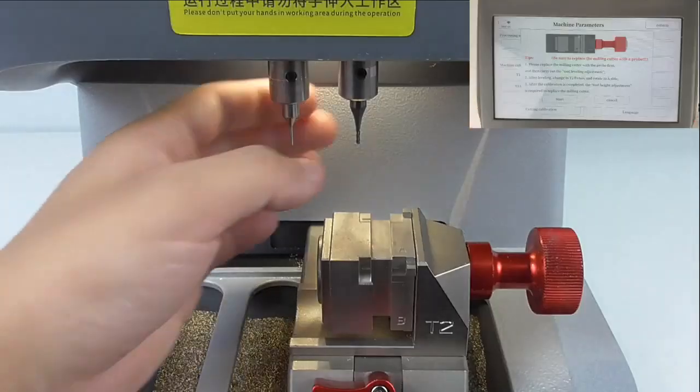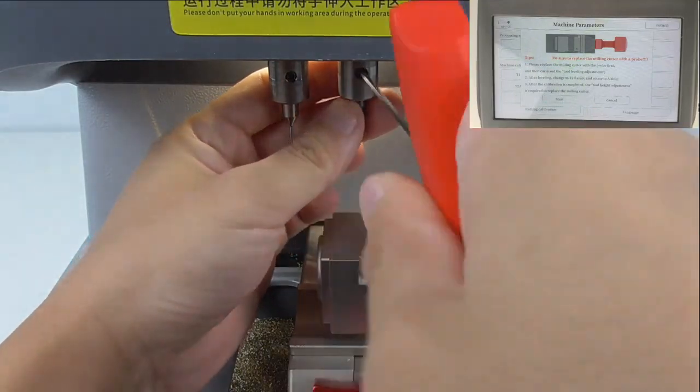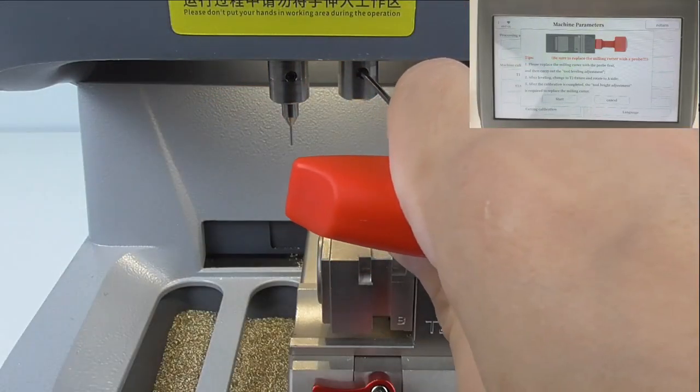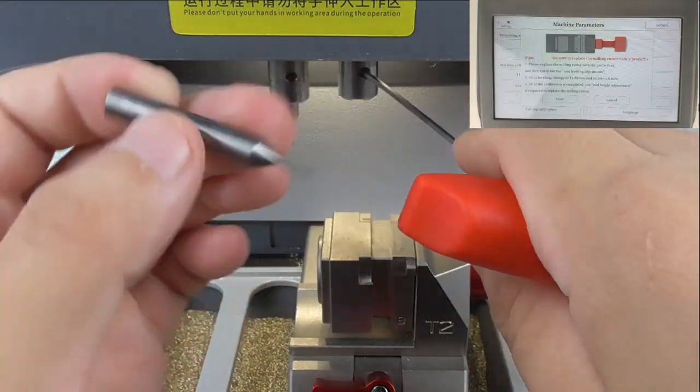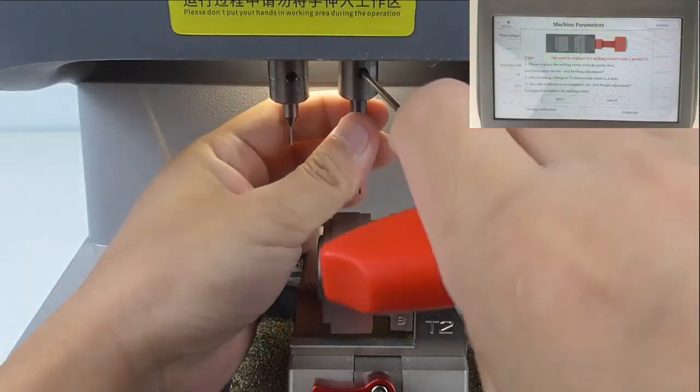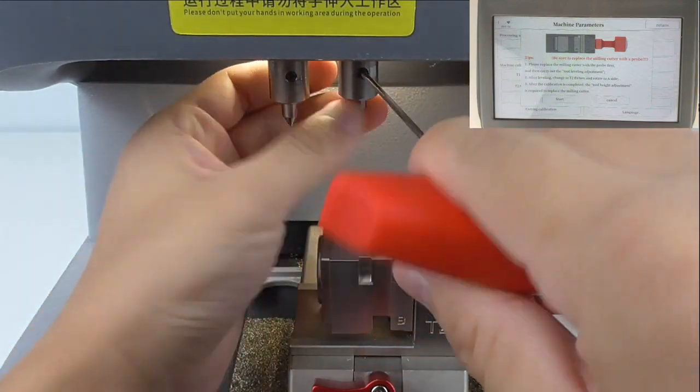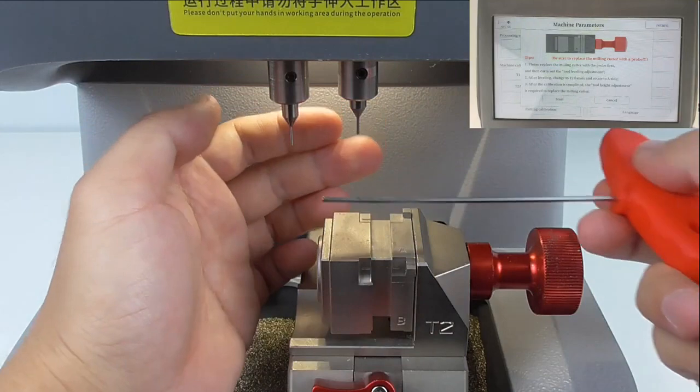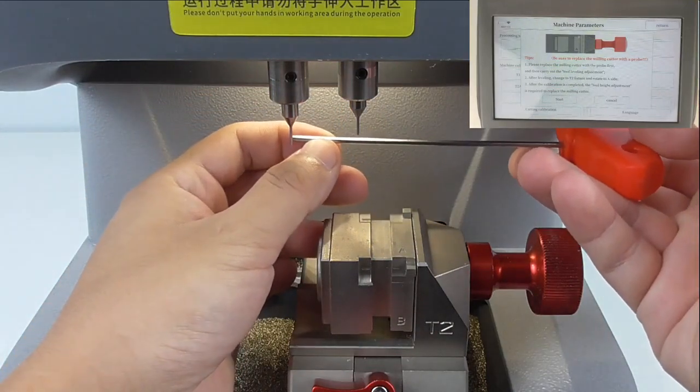Here we need to take off the cutter first and change to our probe. Install it. Make sure it is higher than the other one.